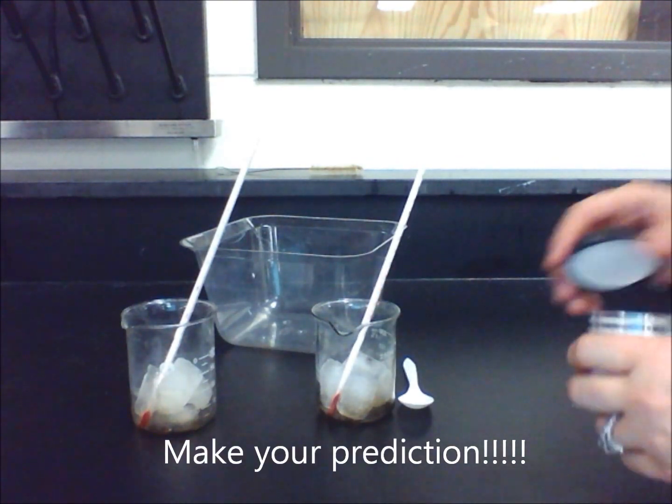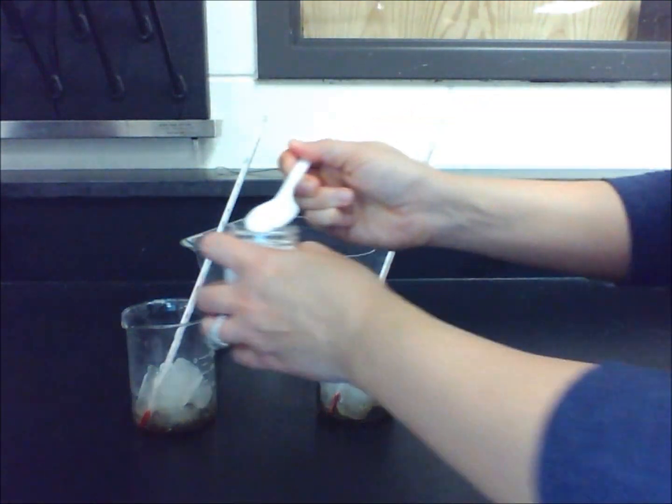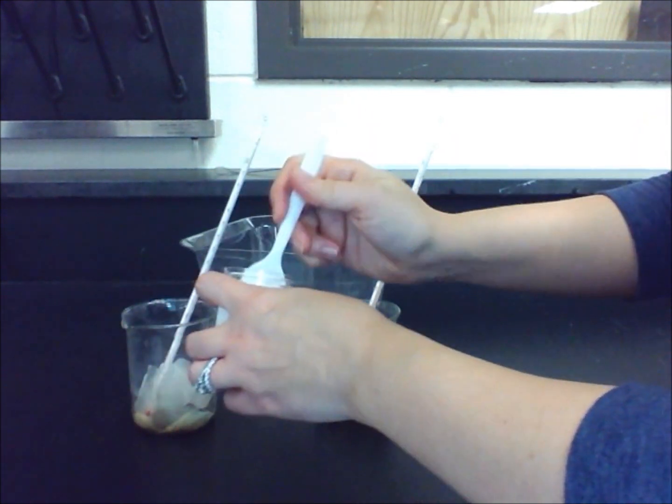Now add two spoonfuls of salt to beaker A only. Stir the mixture with the plastic spoon.